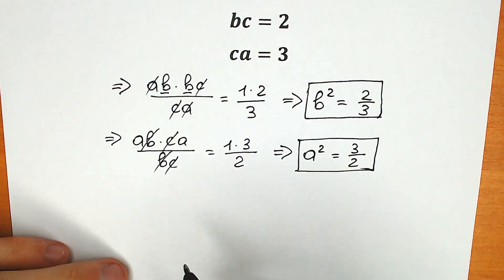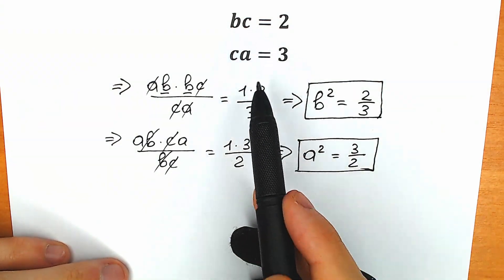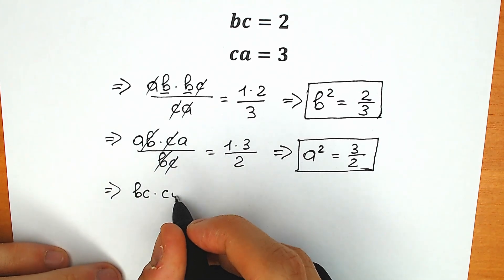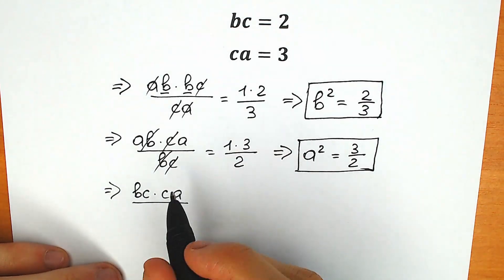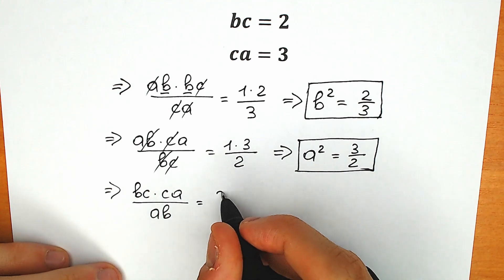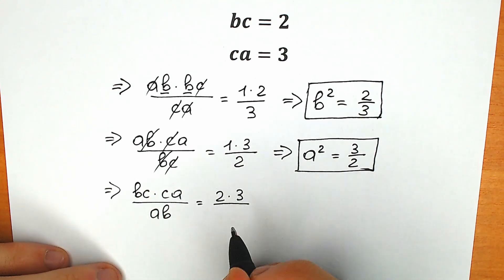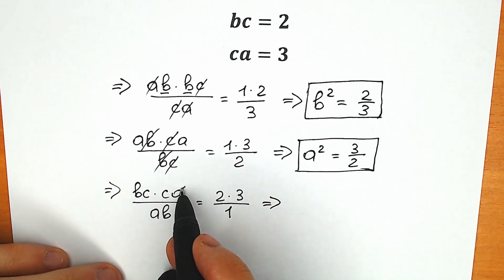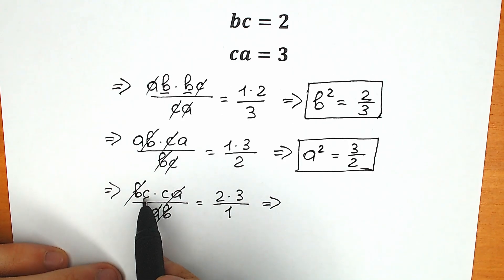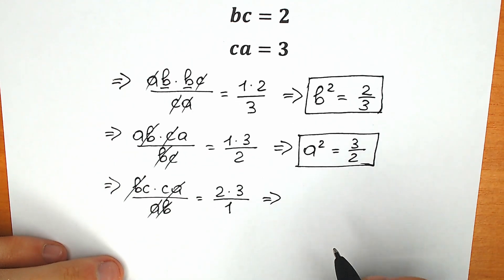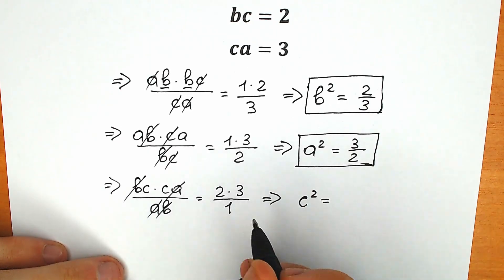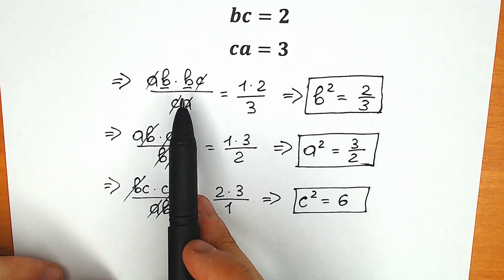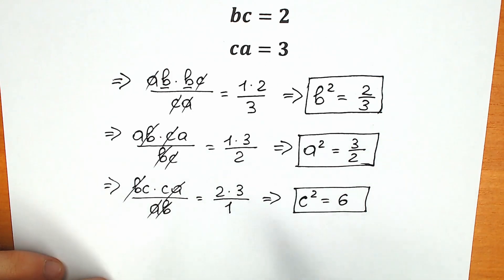For the last combination, we multiply bc times ca divided by ab. We have bc times ca, divided by ab. bc equals 2, ca equals 3, and ab equals 1. With the same logic, we cancel a and a, cancel b and b, leaving only c times c, which is c squared. So c squared equals 2 times 3 over 1, which is 6. This completes step one: we have found a squared, b squared, and c squared.